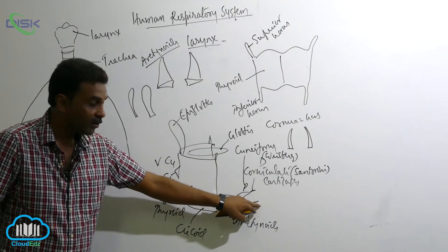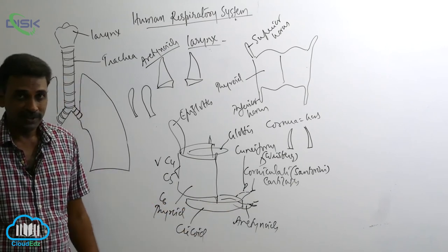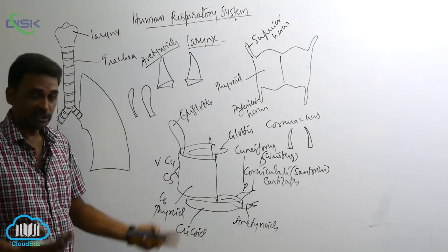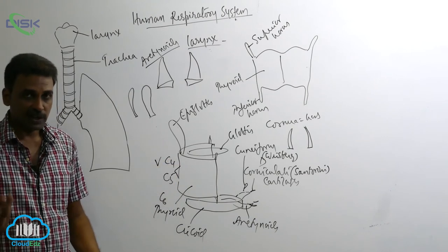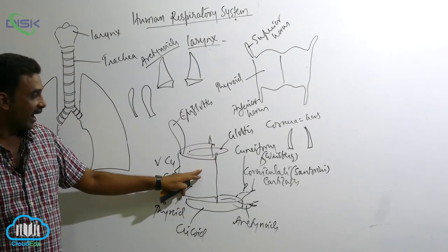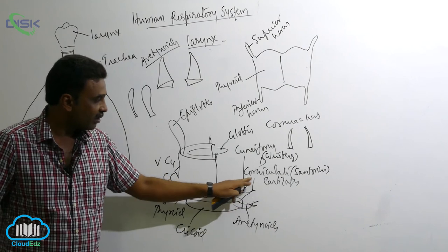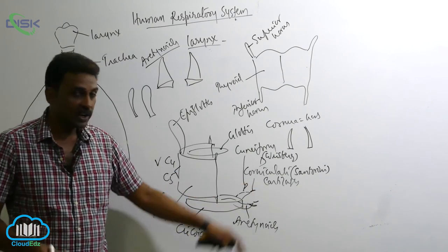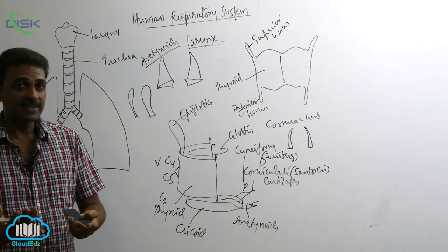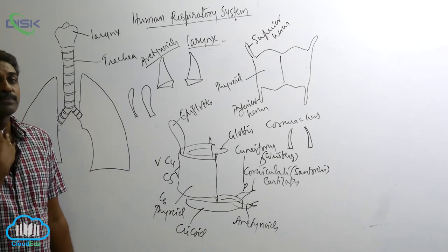To summarize: cuneiform and corniculate cartilages are paired and both attached to the arytenoids, which are also paired and attached to the cricoid at C6. The thyroid is at C4 and C5, and from it originates the epiglottis, which covers the glottis. The cricoid and thyroid are made entirely of hyaline cartilage. The epiglottis, corniculate, and cuneiform cartilages are elastic cartilage. Arytenoids have hyaline cartilage at the base and elastic cartilage at the tip. A total of nine cartilages make up the voice box.